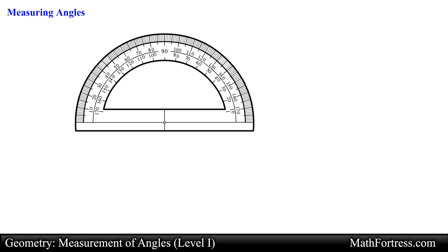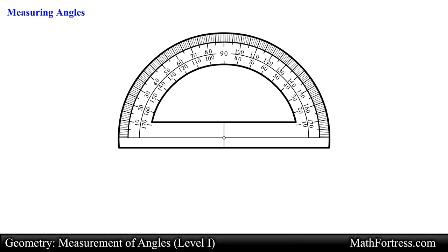A typical protractor would have two sets of numbers. The inner numbers start at 0 degrees which is located at the lower right edge of the protractor and increase as you move counterclockwise around the protractor.